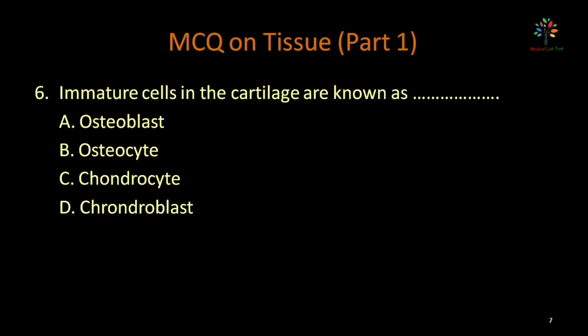Immature cells in cartilage are known as — options: osteoblast, osteocyte, chondrocyte, chondroblast. Mature cells have the suffix '-cyte' and immature cells have the suffix '-blast.' Osteoblast refers to immature bone cells; osteocyte is the mature bone cell. Chondrocyte is the mature cartilage cell. Chondroblast — 'chondro' means cartilage, 'blast' means immature — so the answer is chondroblast.